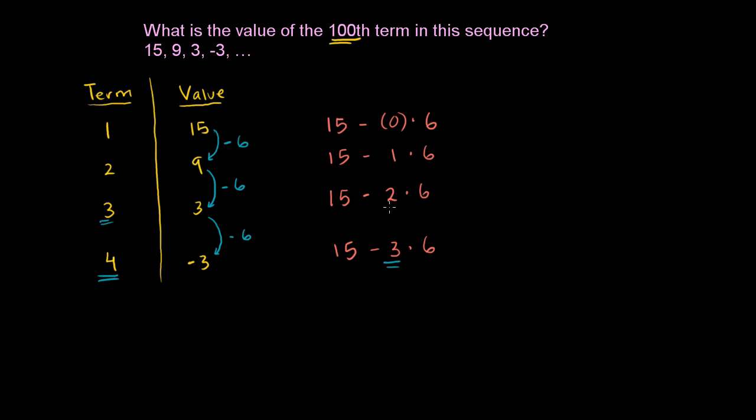The third term, we have a 2. The second term, we have a 1. So if we had the nth term, if we just had the nth term here, what's this going to be? It's going to be 15 minus, you see it's going to be n minus 1 right here.